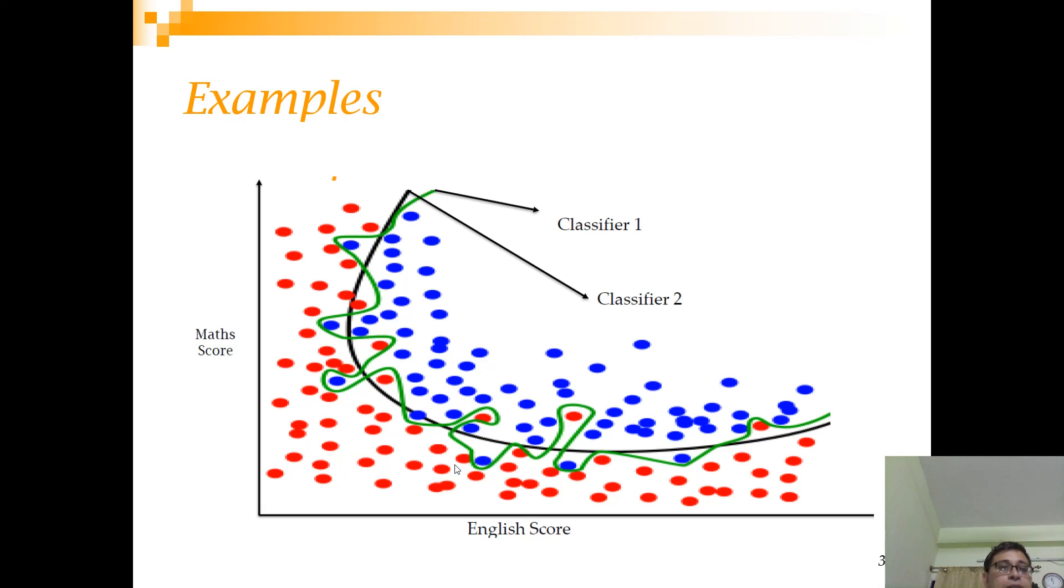So now there are two classifiers that are in business over here. One is this classifier 1 which is marked in green color and another is classifier 2 which is marked in black color. Both of these classifiers are actually trying to draw a line which differentiates blue from the red. So here a question to you is which classifier do you think is better? Is it classifier 1 or is it classifier 2?